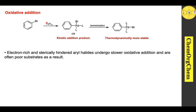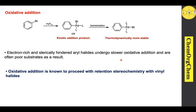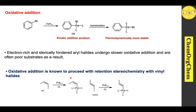In general, electron-rich and sterically hindered aryl halides undergo slower oxidative addition and are often poorer substrates as a result in the Stille cross-coupling reaction. Oxidative addition is known to proceed with retention of stereochemistry when you use vinyl halides. For example, when you take a cis-vinyl iodide and use it under this reaction condition, it produces the corresponding intermediate with retained stereochemistry.